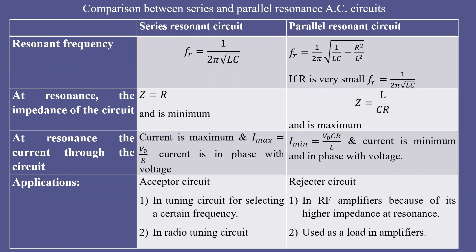Comparing the resonant frequency: in the series resonant circuit, it is given by FR = 1 / (2π√LC). You can observe it depends only on L and C — it is independent of the resistance connected. The resonant frequency of a series resonant circuit is independent of R and depends only on the values of L and C.